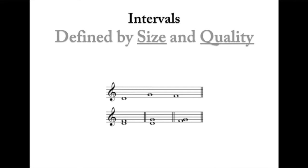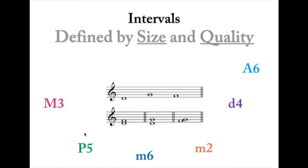Intervals are defined based on two things: size and quality. The first part of the interval name describes the quality - for instance, major, perfect, minor, diminished, or augmented. The second part describes the size - so in these examples I have a major third, a fifth, a sixth, a fourth, or another sixth. To construct intervals, we always start by constructing the size first.